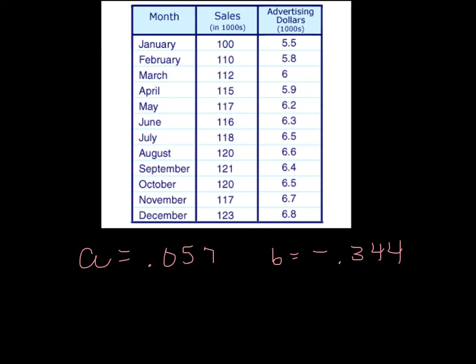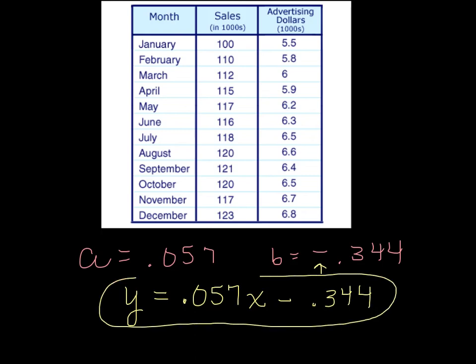So that's what we came up with. So for the linear regression line, you always write the variable Y, Y equals. Now I'm going to put that A number 0.057. And remember you always have the letter X. So that means the slope of my line is 0.057. And then you put the B value. Now I wouldn't put plus and then this negative because the answer is negative. So I'm going to put minus and then go ahead and put 0.344. So that is the equation of the regression line.